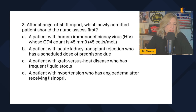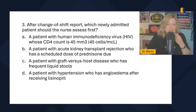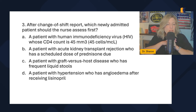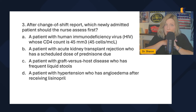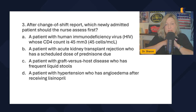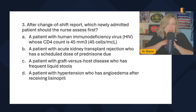Question three: after change of shift report, which newly admitted patient should the nurse assess first? I want to choose the unstable patient. What makes a patient unstable? Expected findings make them stable; unexpected findings make them unstable. Option A: a patient with HIV whose CD4 count is 45 — that's expected with HIV, so that patient is stable.